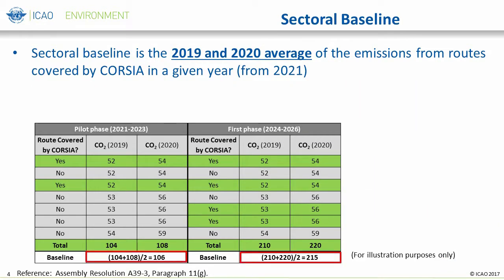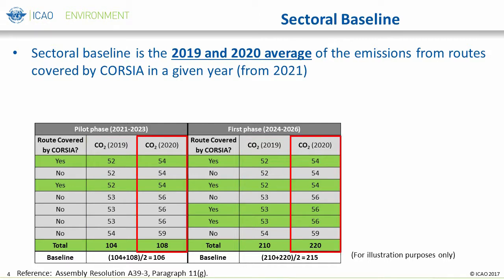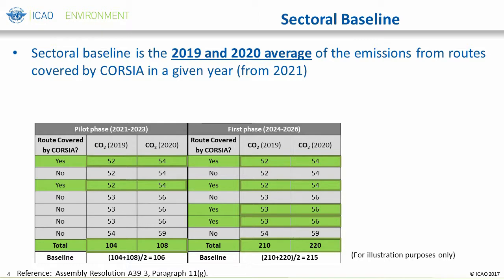The sectoral baseline is the average of total CO2 emissions between 2019 and 2020, with the route coverage of CORSIA in a given year. It is calculated by summing the emissions in 2019 and the emissions in 2020. However, we are only summing the values for those routes that are covered under CORSIA, which are noted in green. Let's go through it one step at a time using the table in this slide as sample data for purposes of better understanding the sectoral baseline.